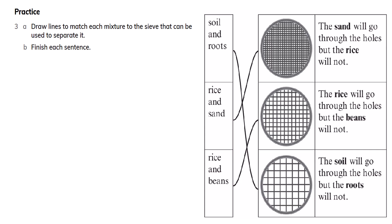Draw lines to match each mixture to the sieve that can be used to separate it. Soil and roots can be separated using the third sieve — the soil will go through the holes but the roots will not. Rice and sand can be separated using the first sieve — the sand will go through but the rice will not. Rice and beans can be separated using the second sieve — the rice will go through but the beans will not.